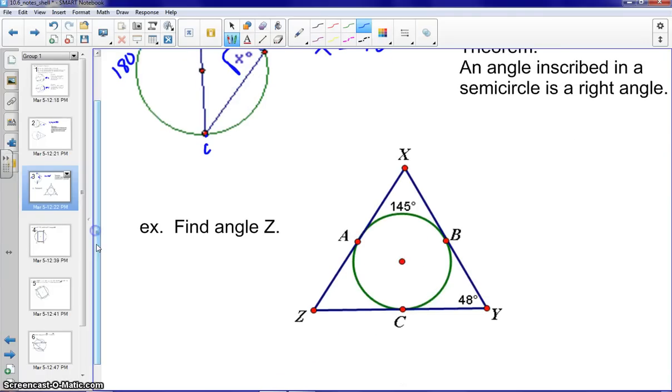First one, we have a circle inscribed in a triangle. If you notice, we have ice cream cone in three different positions there on the top, the left, and the right. And from the theorem that we just did two slides ago, we know that angle X would be supplementary with the minor arc AB. Therefore, we would get angle X to be 35 degrees.